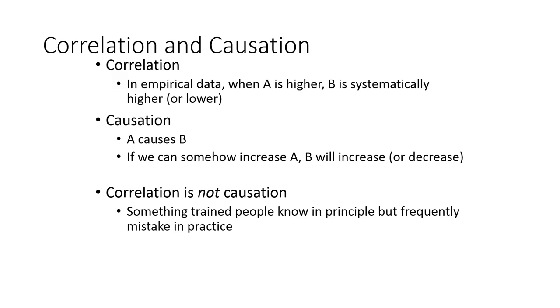So correlation simply says that there is a relationship between two variables. As one changes, we see a relationship with the other variable. That variable changes as well. What correlation doesn't tell us, however, is whether the change in one of these variables is actually causing the change in the other variable.